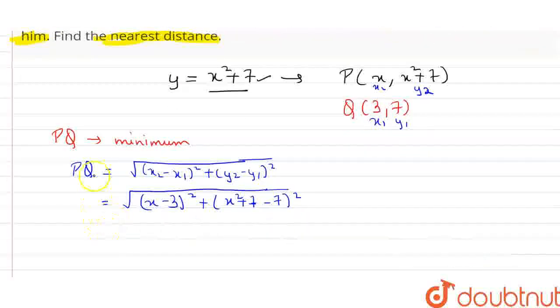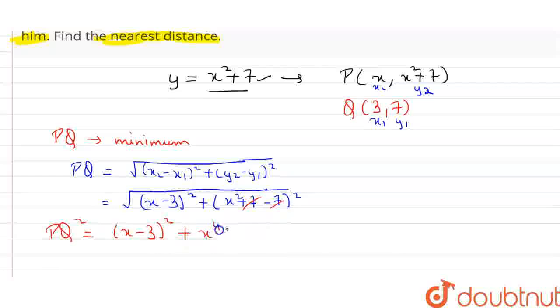So from here if we square both sides, PQ square will be (x minus 3) whole square plus, this 7 and this 7 has cancelled, x to the power 4.